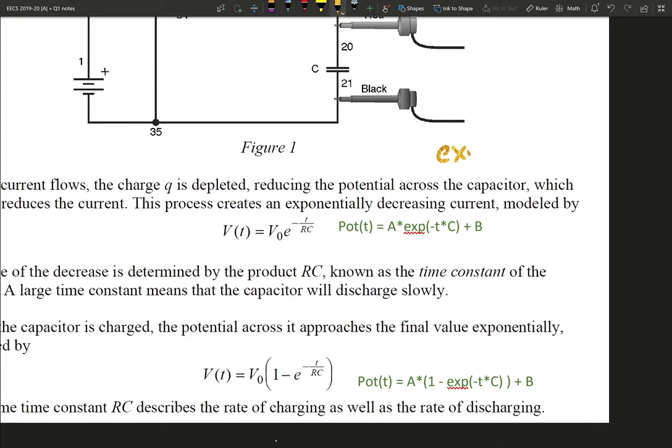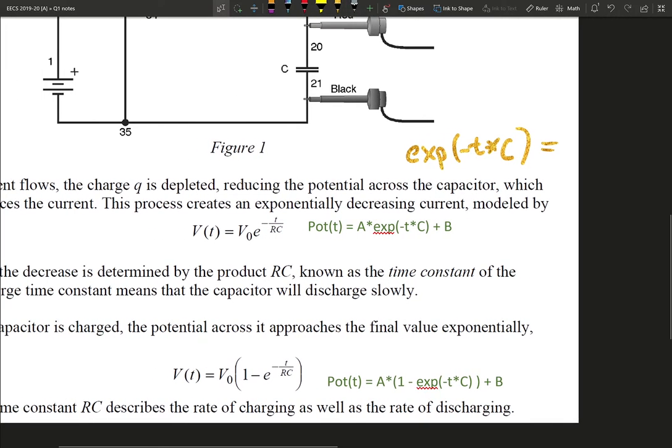If you see exp of something, inside of minus t times c, this is the same if you were to write it out by hand: e to the minus t times c power. The c in this, though, is not coulombs.